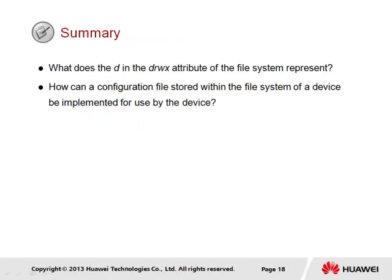In summary, we have a couple of questions. The first asks what does the d in the drwx attribute of the file system represent? The d in the attribute list represents a directory in the storage location in which multiple files may be located. The cd command may be used together with the listed directory to specify the path in order to reach any files contained within the directory. Secondly, how can a configuration file stored within the file system of a device be implemented for use by the device? The command startup saved configuration, followed by the name of the configuration file and the storage location, is specified in order to identify the configuration file to be used at next startup. The display startup command can then be used to verify that the command has taken effect.